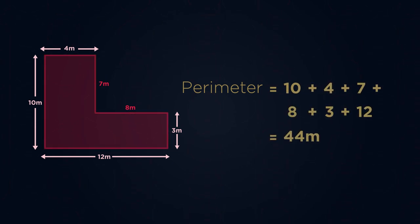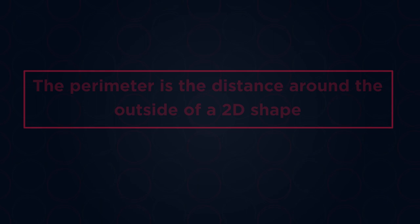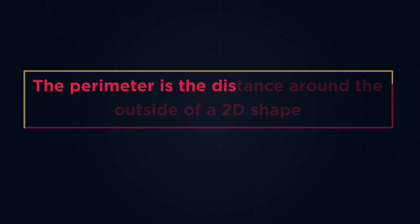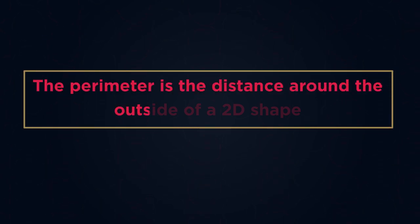So from this video, you should know that the perimeter is the distance around the outside of a 2D shape. And you've practised finding the perimeter for simple shapes, compound shapes, and even circles.